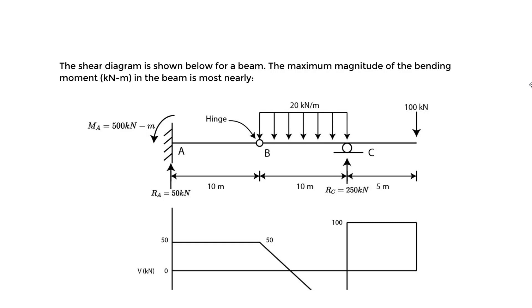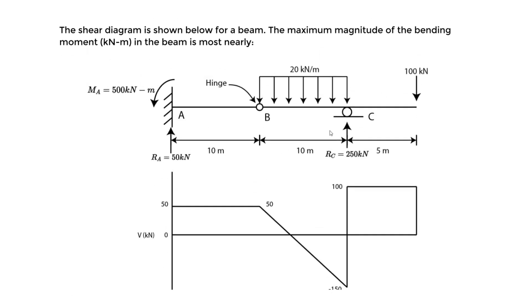Okay, another example. We are looking at shear-moment diagrams and we want to find the maximum moment. I believe I've done this before in a video but the final answer was incorrect to a degree. The procedure is the same, so let's re-attempt this by looking at the shear diagram and the original loading system to find the maximum bending moment in kilonewton-meters. We're told the shear diagram is shown below for a beam and the maximum magnitude of the bending moment is most nearly what.